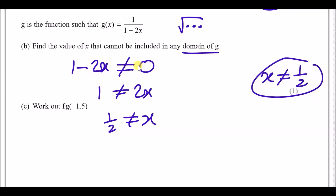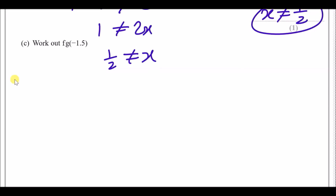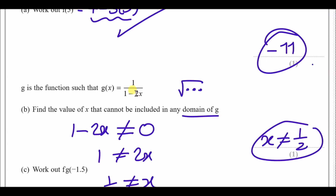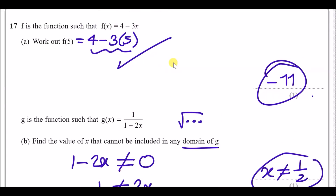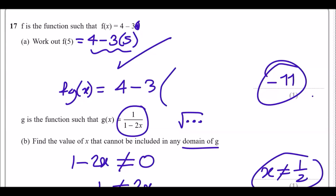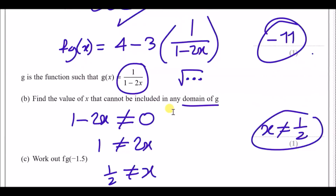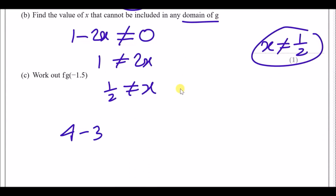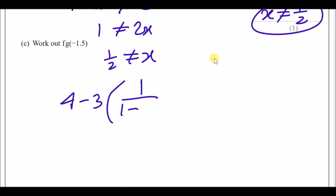Part c: work out fg(−1.5). fg means plug g into f — replace the x in f(x) with g(x). So fg(x) = 4 − 3 × (1 / (1 − 2x)). Now substitute x = −1.5: fg(−1.5) = 4 − 3 × (1 / (1 − 2 × −1.5)). Put this in the calculator.